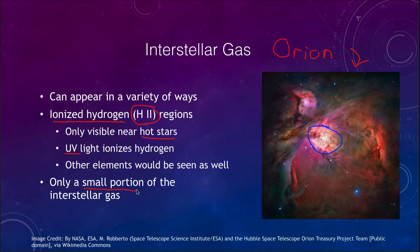This is only a small portion of the interstellar gas — there is a lot more material out there that would be invisible to us. You can only see these ionized hydrogen regions when there is a bright star giving off lots of ultraviolet light nearby. A star like our sun wouldn't give off enough ultraviolet light to ionize a cloud like this. It takes some of the hottest stars to be able to give off this kind of radiation.